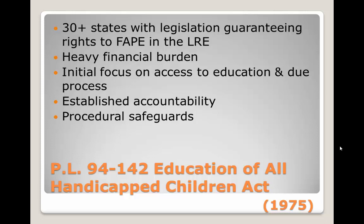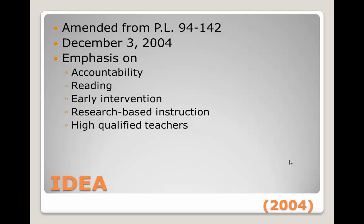Public Law 94-142 also established a process by which state and local education agencies would be held accountable for providing services to all handicapped children. To this end, Congress included an elaborate system of legal checks and balances, called procedural safeguards, which are designed to protect the rights of children with disabilities and their parents.